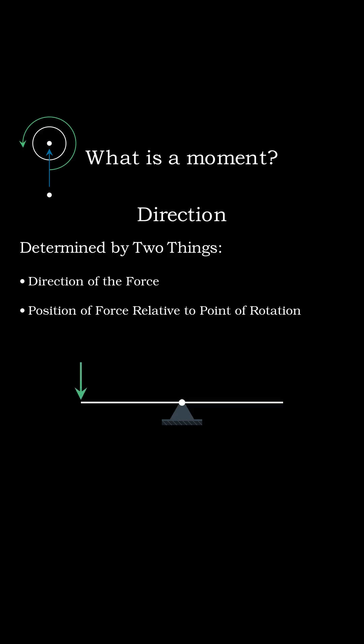A downward force applied on the left side of the pivot makes the teeter-totter rotate counterclockwise. If we slide that force to the right side, it makes the teeter-totter rotate clockwise instead.